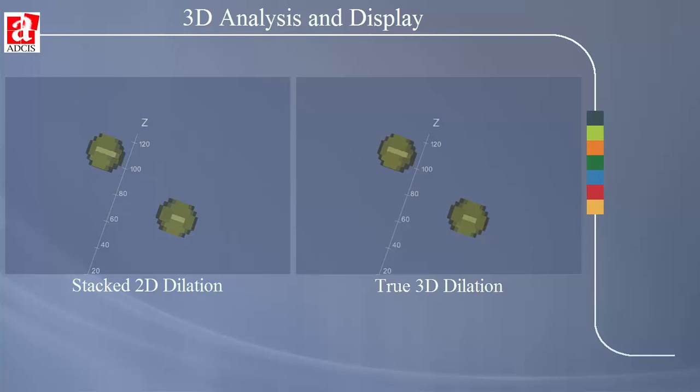As a simple example, on the left is a dilation of two spheres using a disk structuring element by means of a stacked 2D analysis.